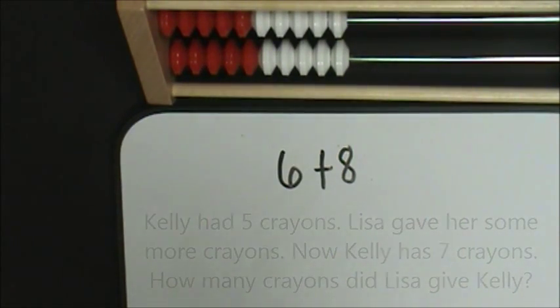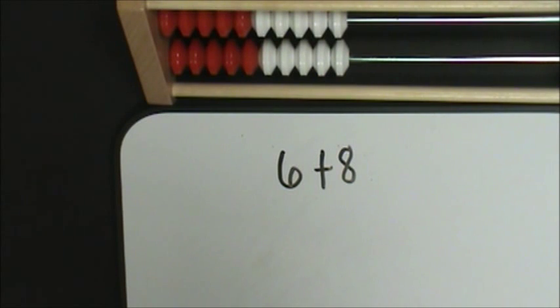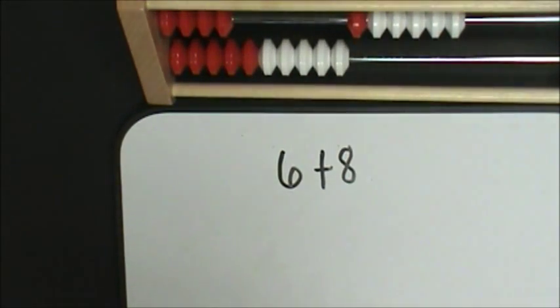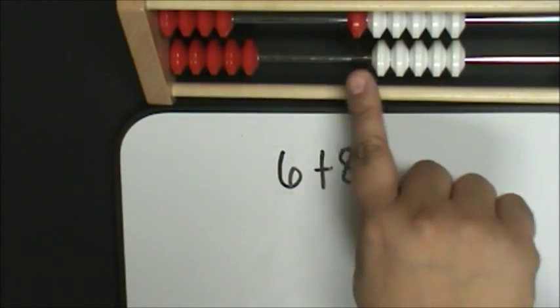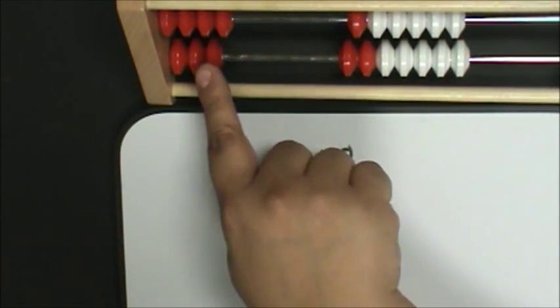A fourth way a Reckon Rec can be used is to help students by adding doubles. First, I will represent six on the top row. Then I will represent eight on the bottom row: five, six, seven, eight.